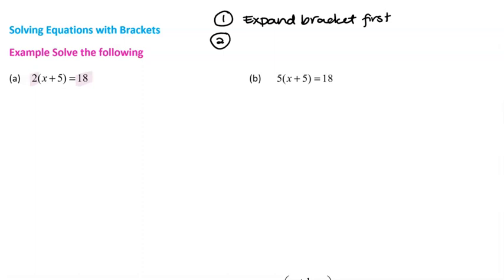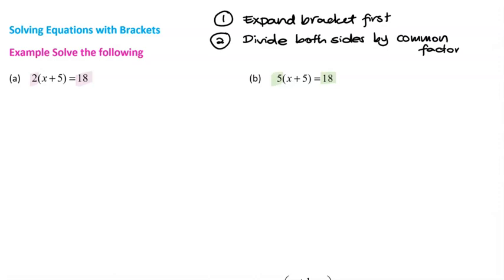You'll see this doesn't always work. In the next question, for example, we've got 5 and 18. You could technically divide both sides by 5, but then you'd be dealing with 18 over 5, and things can get messy. So the first method works all the time; the second method works some of the time, but you'll end up with awkward fractions if you don't have a nice common factor. I really recommend strategy number one for a question like B. The second strategy is: divide both sides by the common factor.